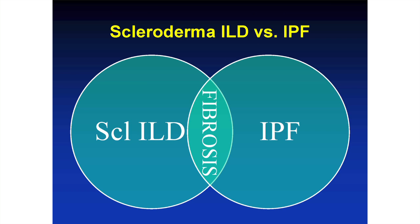Idiopathic pulmonary fibrosis, as we've learned over the last five to ten years, also does not respond to anti-inflammatory therapies such as cyclophosphamide, azathioprine, and mycophenolate — all of which have been tried in IPF and shown to be of no benefit. We'll take a look at two studies announced in May of this year in idiopathic pulmonary fibrosis. Although scleroderma-associated ILD and IPF are separate entities, they share the common pathway of fibrosis.